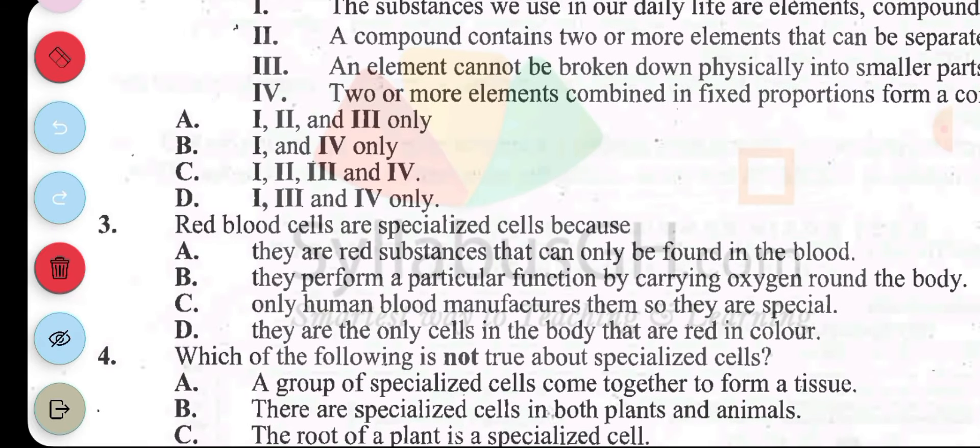Red blood cells are specialized cells because A, they have red substances that can only be found in their blood. B, they perform a particular function by carrying oxygen around their body. C, only human blood manufactures them so they are special. D, they are the only cells in their body that are red in color. The answer to question 3 is B. They perform a particular function by carrying oxygen around their body.